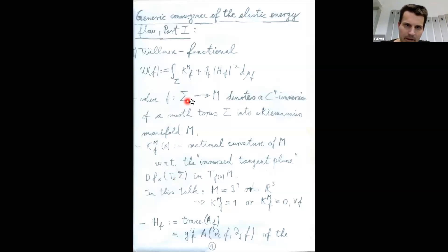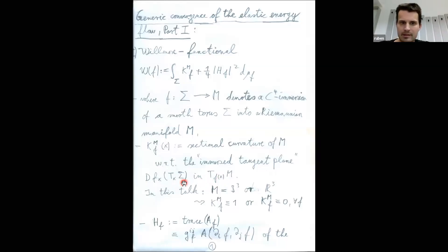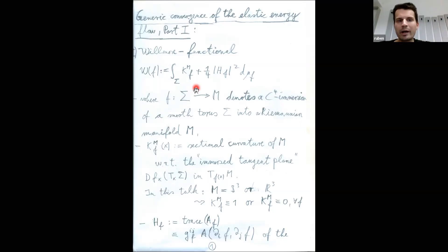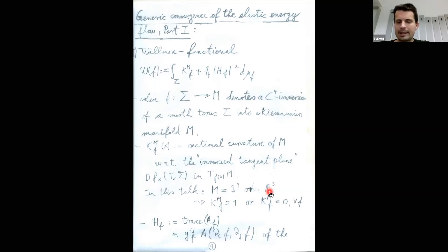One has a tangent space at the same point x in the tangent space of the Riemannian manifold M at the image point f of x, and one can compute the sectional curvature with respect to this tangent space. In general this is quite complicated, but the Willmore functional simplifies because M will either be the three-dimensional sphere or the three-dimensional Euclidean space, so the sectional curvature is either one or constantly zero — simply numbers.